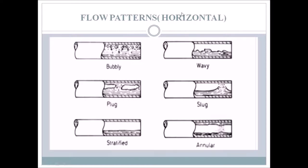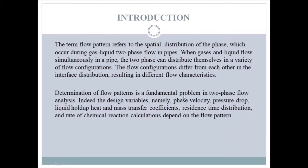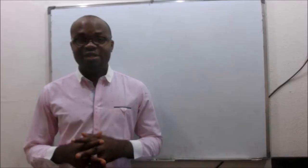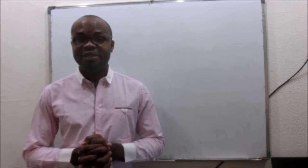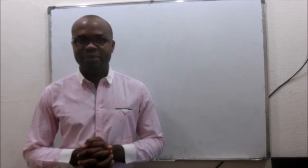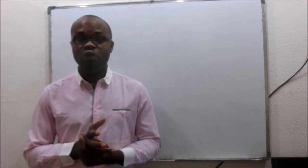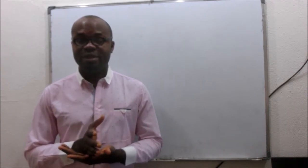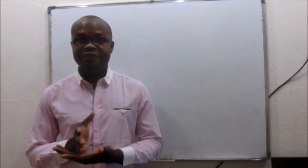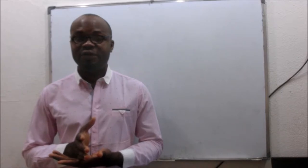These are the various flow patterns in horizontal pipe. Given a superficial velocity of gas and liquid and pipe diameter, we should be able to say that a flow is bubbly, wavy, or another type, so that we can use the appropriate model to calculate parameters like phase velocity, pressure drop, liquid hold-up, heat and mass transfer coefficients, as well as the pressure drop needed for design.